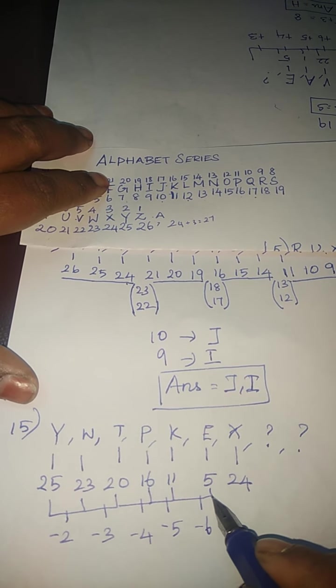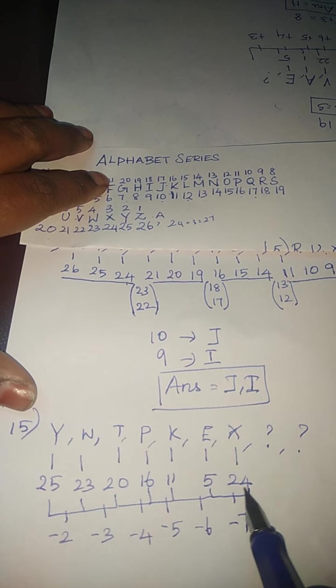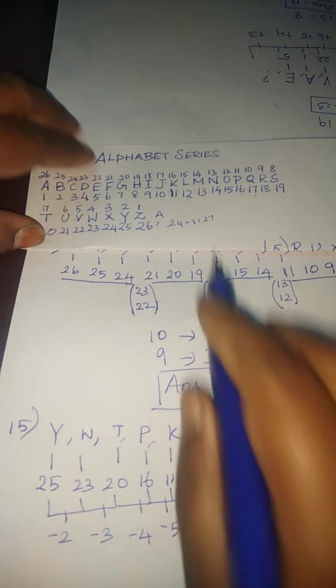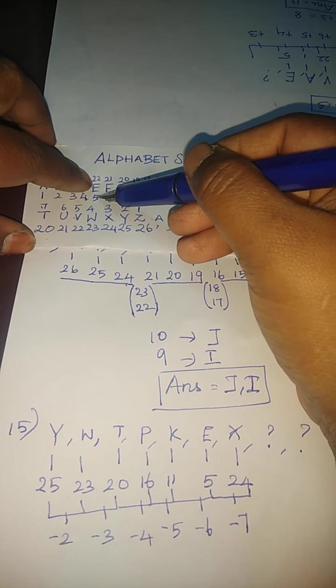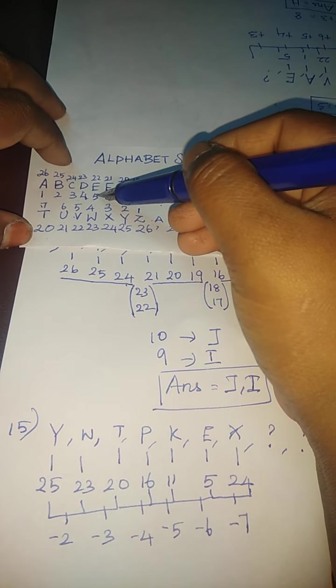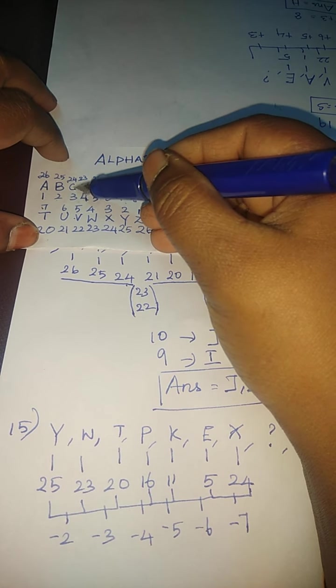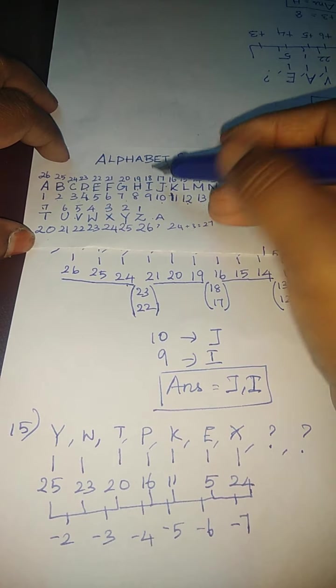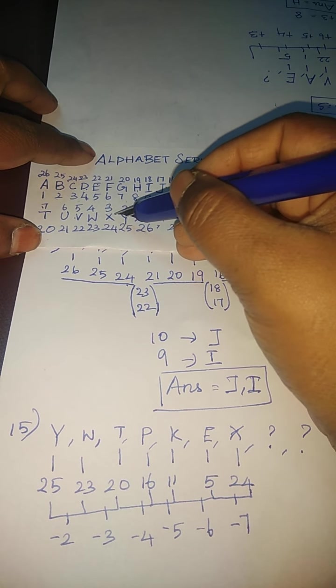And then here minus 7. Because again, here minus 5. 5 is E. Again, in a reversal order. E, D, C, B, A, then Z, Y, X.